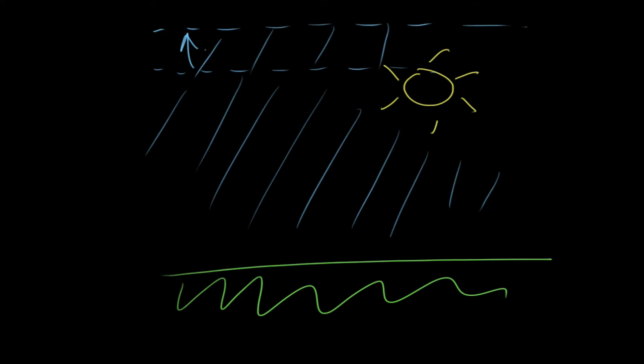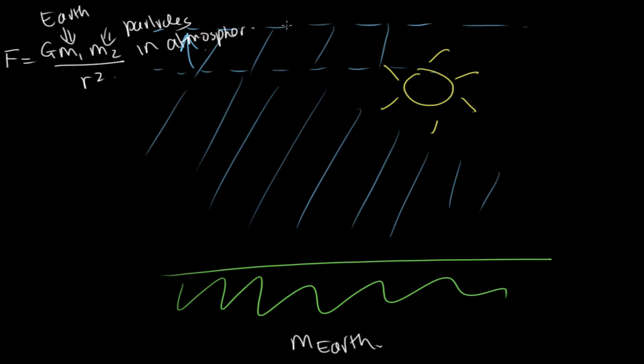And so what's actually happening is that the weight force of this air is slightly reduced because the gravitational force F is equal to g m1 m2 over r squared. One of these masses is the mass of the Earth, and for each of the particles in the atmosphere, this is the mass of particles in atmosphere. The distance from the center of the Earth to the top of the atmosphere has actually increased, so this means that the force has decreased. Because pressure is equal to force over area, as the force decreases, the pressure decreases as well.